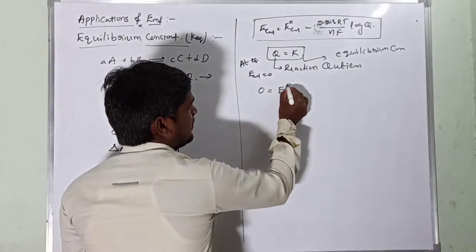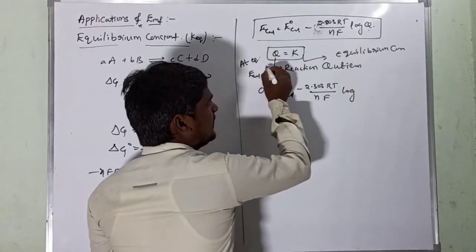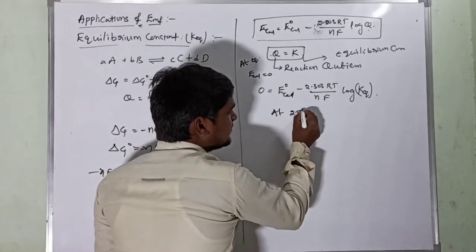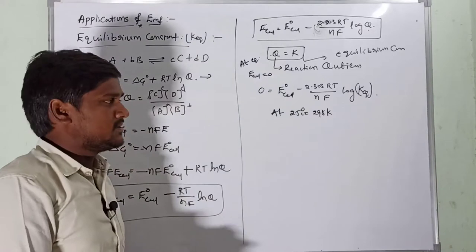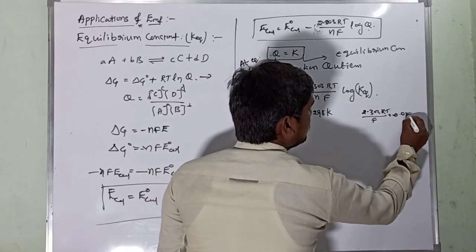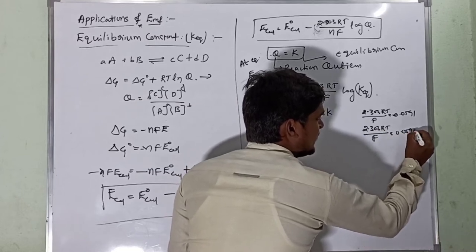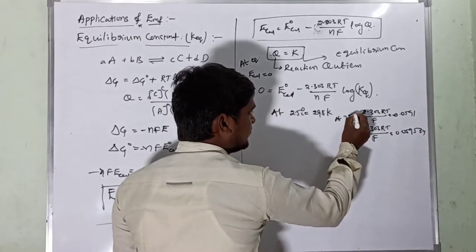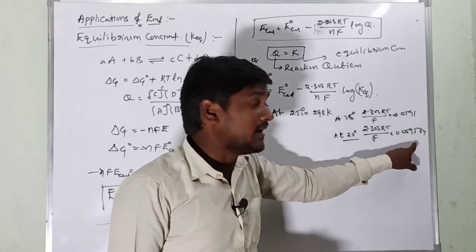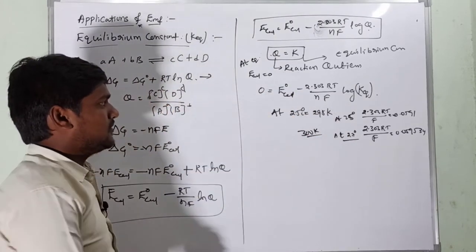Substituting E_cell = 0 into the Nernst equation: 0 = E°_cell - (2.303RT/nF)·log(K_eq). At 25°C (298 K), the value of 2.303RT/F = 0.0591. At 27°C (300 K), this value is approximately 0.0595. These are standard values used in calculations.